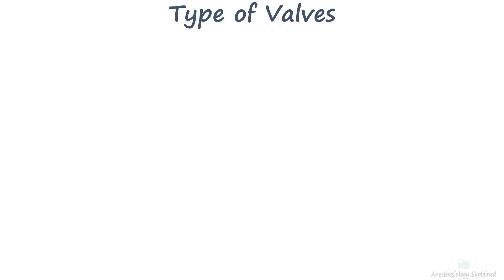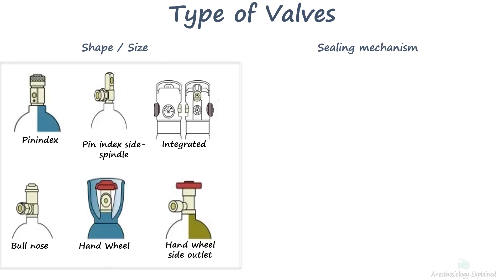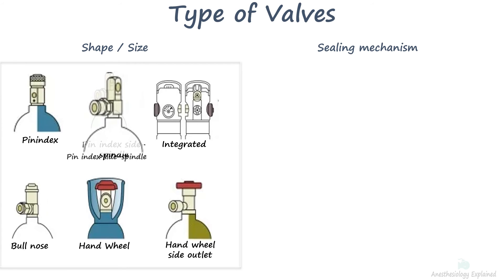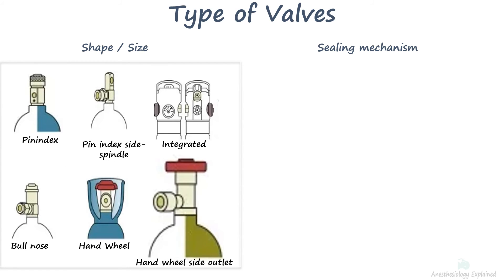Cylinder valves are classified based on shape, size, and the sealing mechanism used. Depending on the size of the cylinder body, different shapes and sizes of valves are used. Smaller cylinders have pin index valves, while larger cylinders have bull-nosed valves. Some valves have a side spindle and wheel which closes and opens the valve outlet, but broadly they fall under pin index or bull-nosed type.